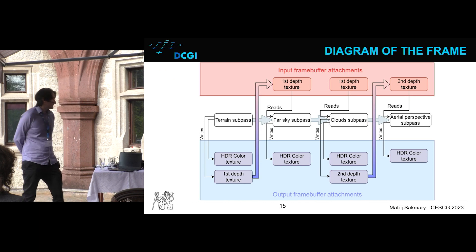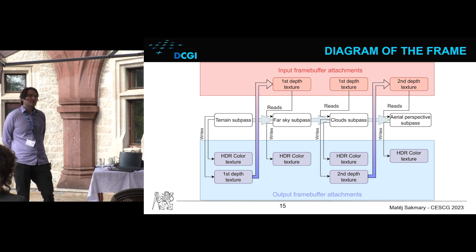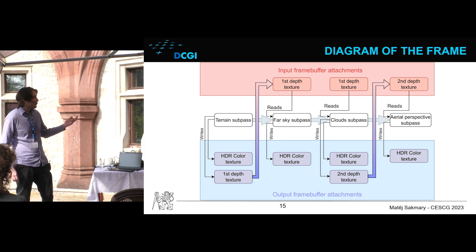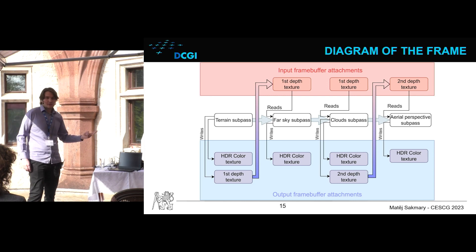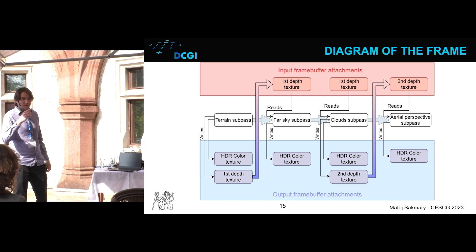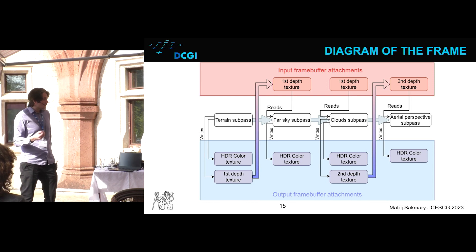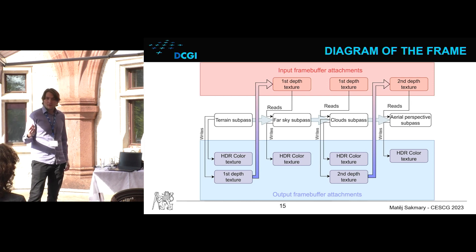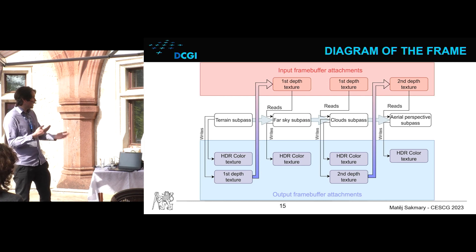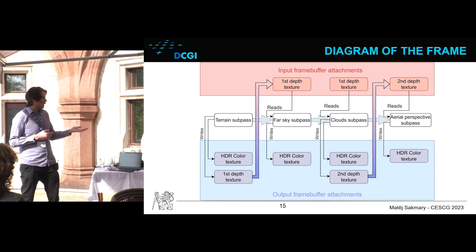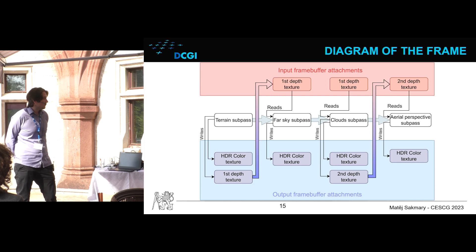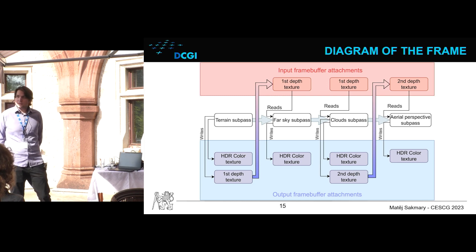This is the diagram of the frame. Most notably, in the cloud sub-pass we use two depth textures: we need to read the depth from the previous sub-pass, but we also need to store the modified depth containing information about the clouds. So we generate a second depth texture, which is then passed to the aerial perspective sub-pass to correctly apply the effects to the entire scene.